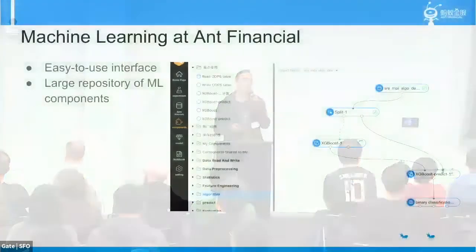Here's how we do machine learning in Ant Financial. There are multiple machine learning systems in Ant Financial, and one of the most popular ones is this web interface. On the left, you will see a bunch of components — for example, data processing, read and write, feature engineering, algorithms for training models, and prediction components. You just drag and drop components from the left to the canvas and link and configure them properly so that it forms a workflow.